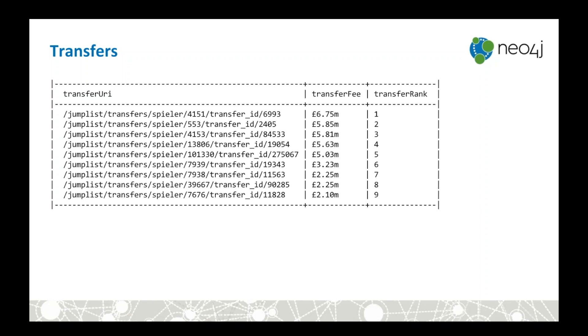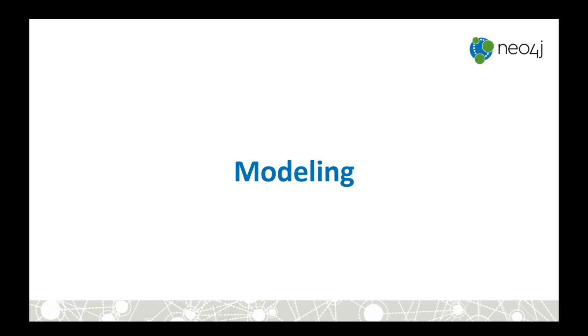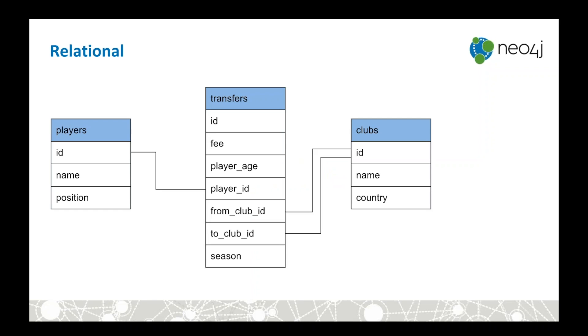A transfer rank of one would mean this was the most expensive transfer in that window. That's the domain we're going to work with. The first thing we need to do is figure out how we're going to store this data — what our model is going to look like.